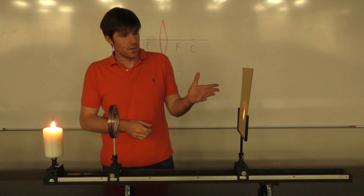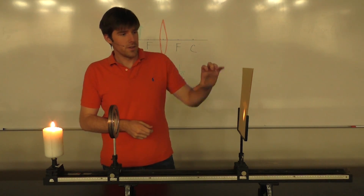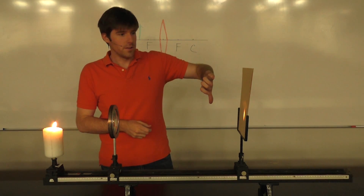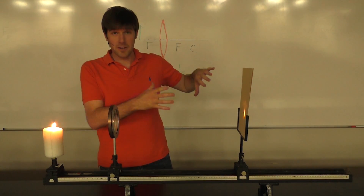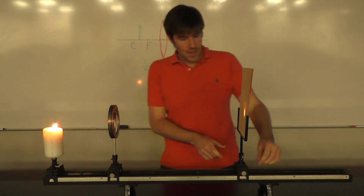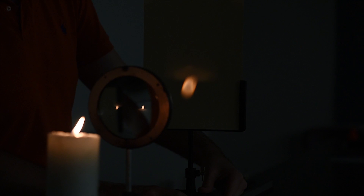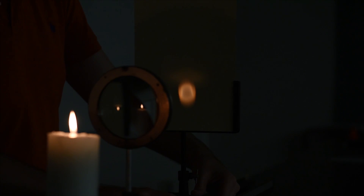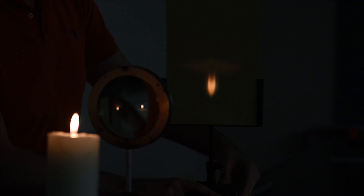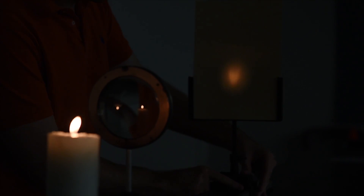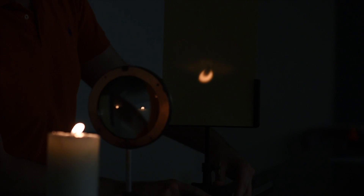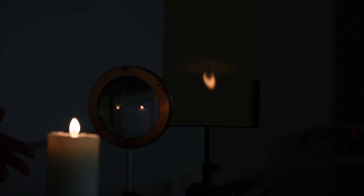In this case you can see that the image formed is inverted and it's also magnified — it's bigger than the object. If I move the screen to any other location the image disappears. So it's only at one particular location, as described by the lens equation, when the object is located between the focal point and the radius of curvature.